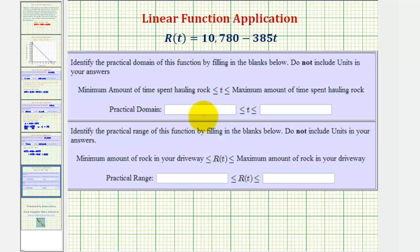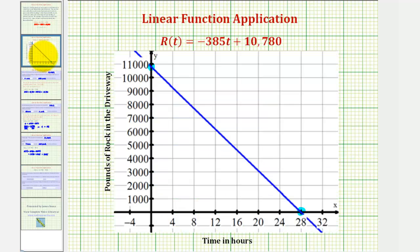If we go back to our graph just for a moment, notice how the practical values of t along the horizontal axis would be the closed interval from zero to 28 hours.